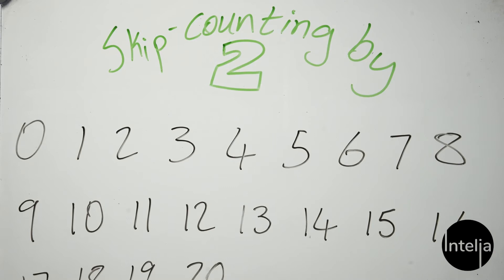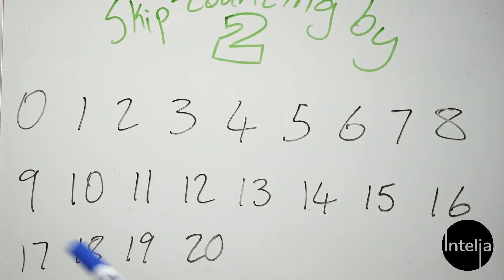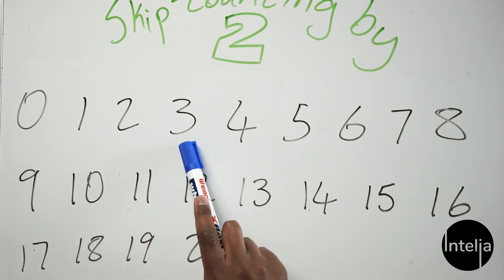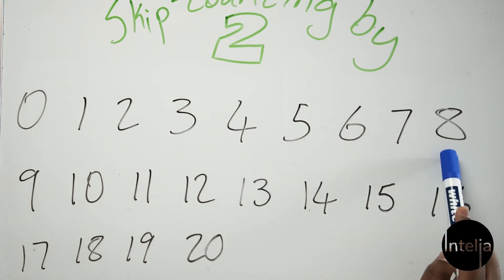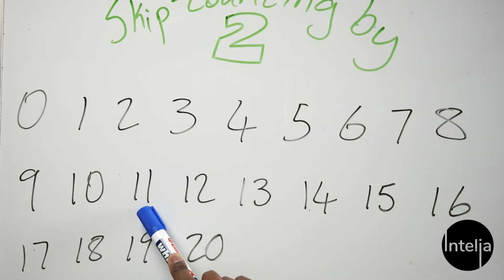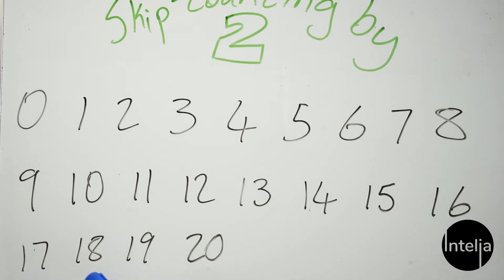If you look at my board, I've got numbers from zero all the way to twenty. Let's count them first: zero, one, two, three, four, five, six, seven, eight, nine, ten, eleven, twelve, thirteen, fourteen, fifteen, sixteen, seventeen, eighteen, nineteen, twenty.